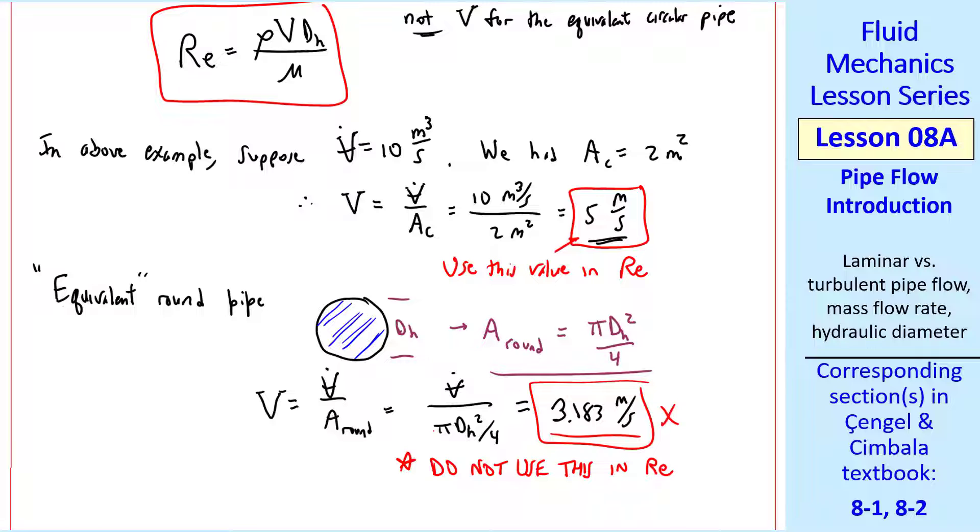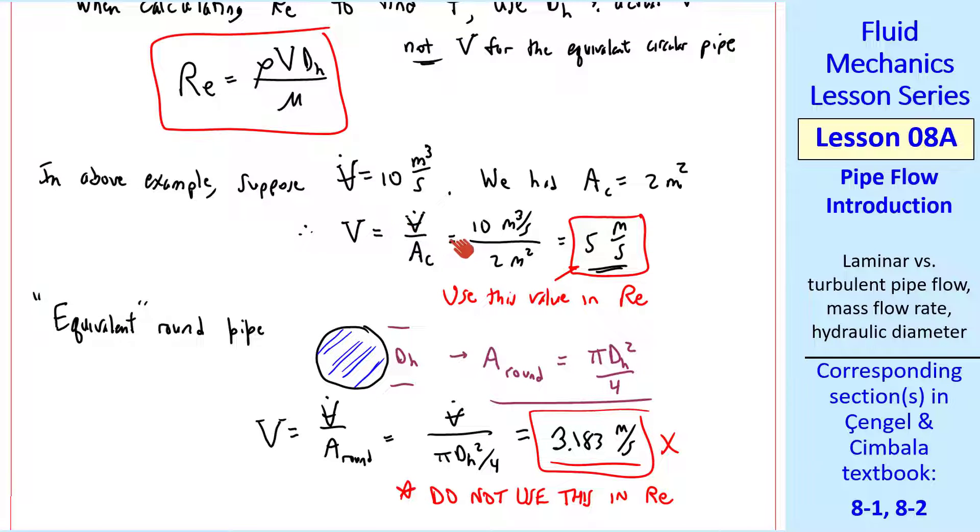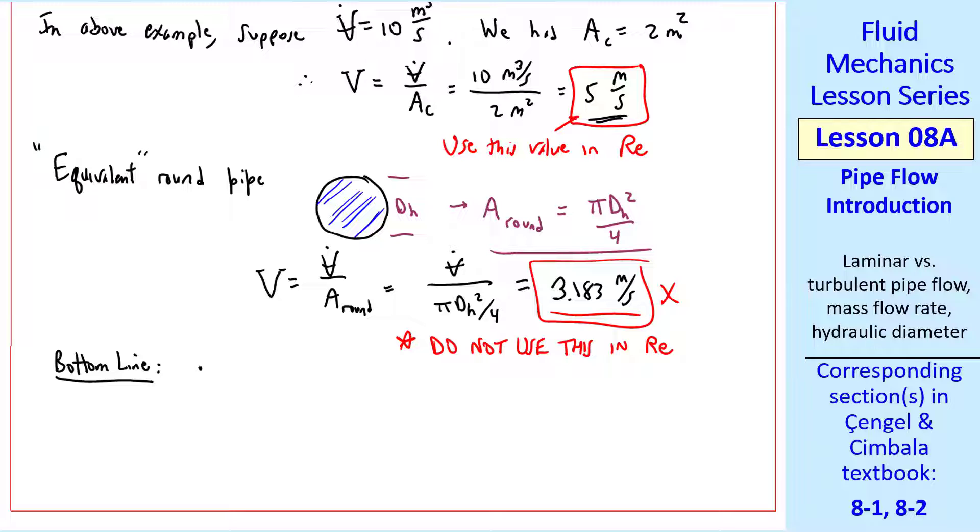Do not use this speed in calculating the Reynolds number. Once you know the actual average speed, in this case 5 meters per second, and we know DH, we can calculate a Reynolds number. So the bottom line, use DH and the actual average speed to calculate Reynolds number. Then use that Reynolds number to calculate Darcy friction factor. And use the actual cross-sectional area and the actual average speed for calculation of M dot or V dot.